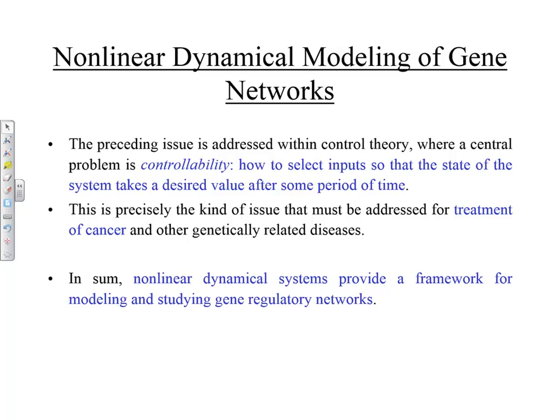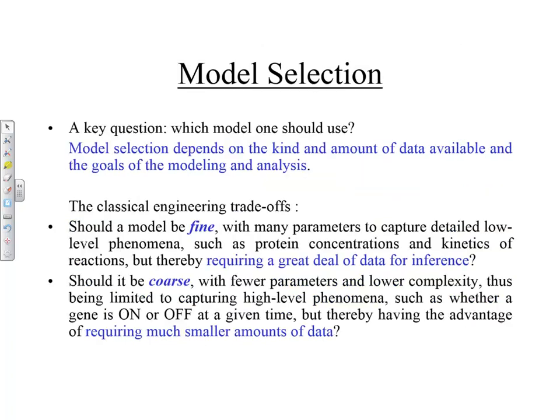If you're going to control a genetic regulatory network, you need to know what the modulators are that are available to you. You must have controllability — the variable you manipulate should be capable of affecting the other nodes where you want the changes. Nonlinear dynamical systems provide a framework for modeling and studying gene regulatory networks. Model selection will depend on the kind and amount of data available and the goals of modeling and analysis. There are classical engineering trade-offs: should you construct a very detailed model with many parameters but hard-to-learn from data, or a coarse model with fewer parameters that needs much smaller amounts of data?